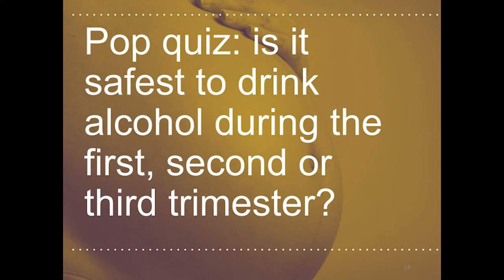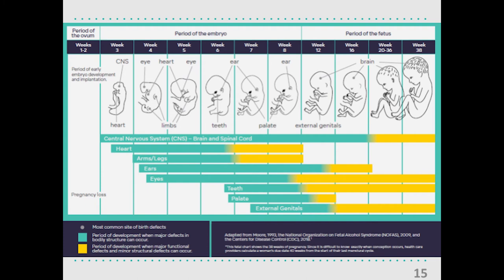There is no safe time to drink alcohol during pregnancy, and prenatal alcohol exposure during any trimester can cause brain injury and other birth defects. If you're curious how alcohol impacts different parts of the body, this chart can be helpful. It shows how alcohol can affect fetal development from 3 weeks through 38 — from the beginning of the first trimester to the end of the third. Different parts of the body are developing at different stages of pregnancy, and if there's alcohol exposure while a certain organ is developing, it's likely to be impacted. The central nervous system, which includes the brain and spinal cord, is developing throughout the entire pregnancy.